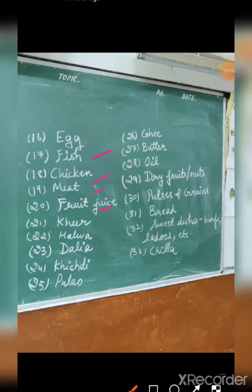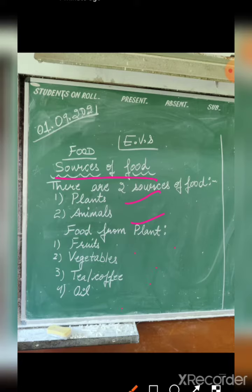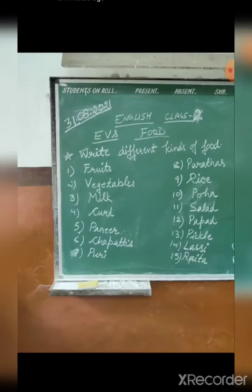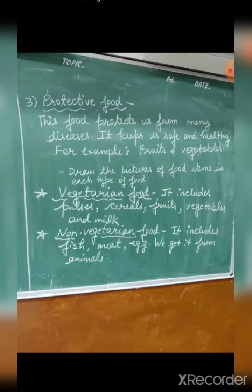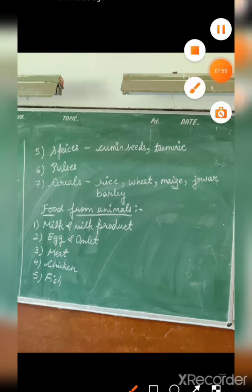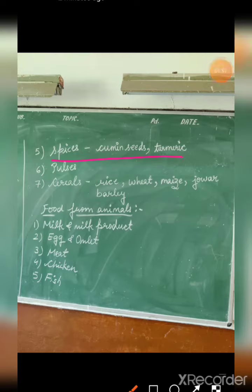From plants we get fruit, vegetables, tea, coffee, oil, spices, and nuts. Cereals include rice, wheat, maize, jowar, barley — all these are cereals. Pulses include daliya and various dals.